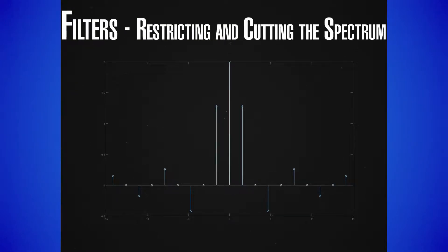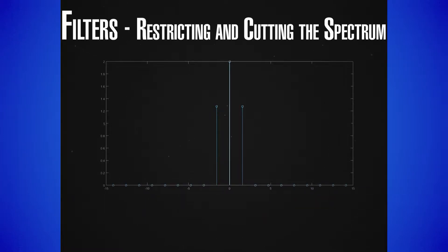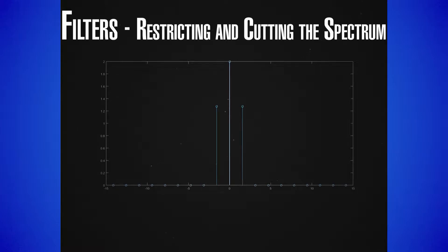As an example, take a periodic rectangular impulse. Its spectrum is a sine x over x type function — oscillating with a maximum and a minimum — and it has infinitely many spectral components. But we can actually restore such a signal using only its central DC component and the two largest frequency components on either side of the spectrum. To restrict and then transmit only those components, the answer is by applying filters.